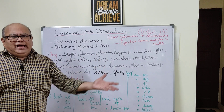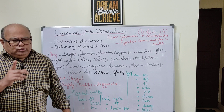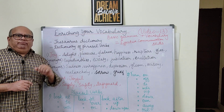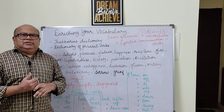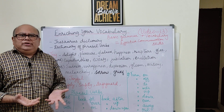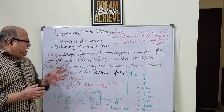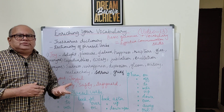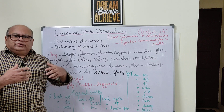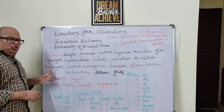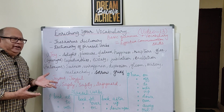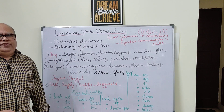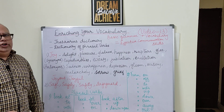There are three types of dictionaries. First, the regular dictionary that we all have — if you don't have one, you should. Second, the thesaurus, which deals with just synonyms and antonyms. Synonyms are words having the same meaning; antonyms are words having the opposite meaning. Third is a dictionary of phrasal verbs.